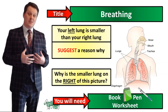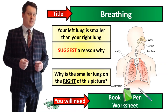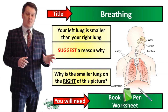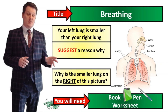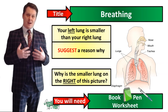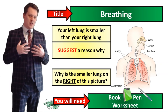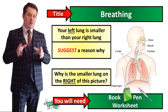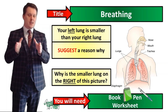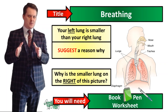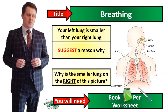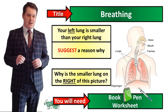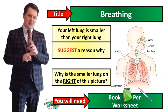Your left lung is smaller because there needs to be space for your heart. The reason why the smaller lung on this picture is on the right hand side is because all anatomical drawings in biology are as if you are looking at somebody else, and when you're looking at somebody else their right hand side is your left hand side and vice versa.